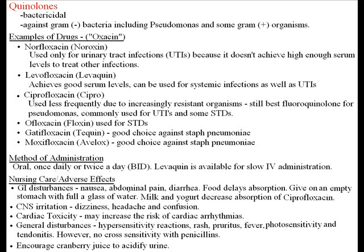Quinolones are a bactericidal group of drugs that are active against gram-negative bacteria and some gram-positive organisms. Examples include norfloxacin, which is used for UTIs because it doesn't achieve a high enough serum level to treat other infections; levofloxacin, which achieves a good serum level and can be used for systemic infections as well as UTIs; ciprofloxacin, used for UTIs and some STDs; ofloxacin, used for STDs; and gatifloxacin and moxifloxacin, both used for Streptococcus pneumoniae.